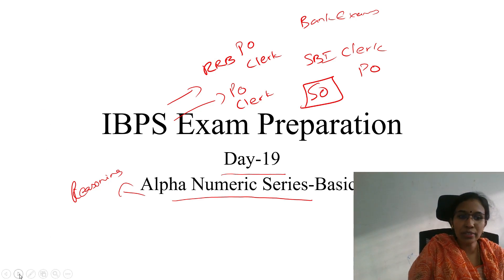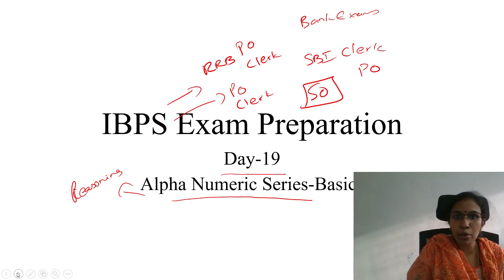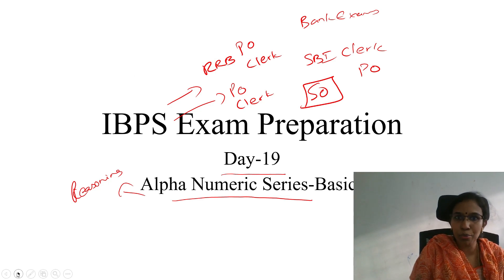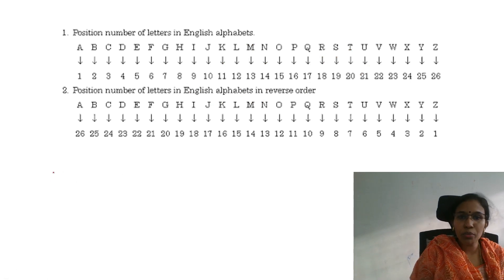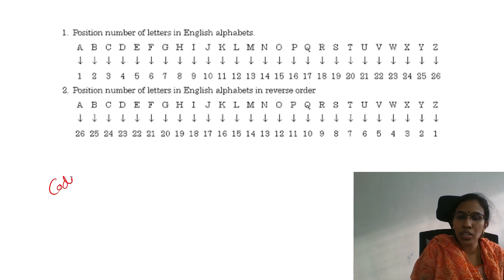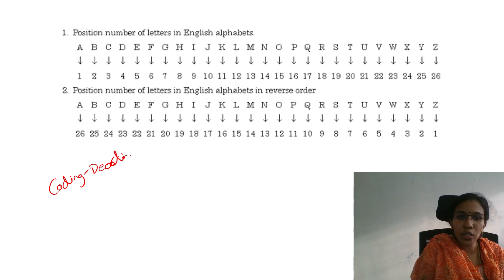So the alphanumeric series is basically a combination we will take for practice. You have an alphanumeric series — the first alphanumeric series is coding and decoding. So the two things are very important to know what you are doing.